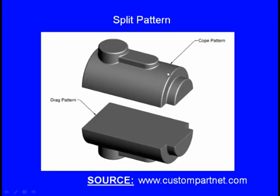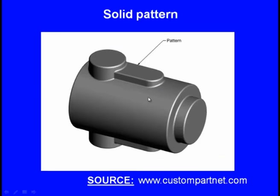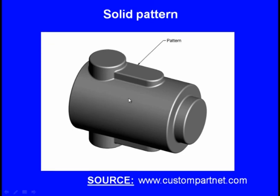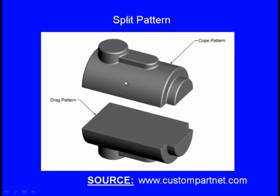The split pattern has a cope pattern and a drag pattern. The drag part is compacted in the drag box and the cope part in the cope box. These two halves can then be withdrawn from their respective boxes, the boxes are closed, and inside there will be a shaped hollow cavity whose geometry matches the final cast component. This is a split piece pattern for making a dumbbell.